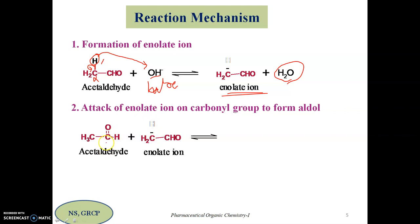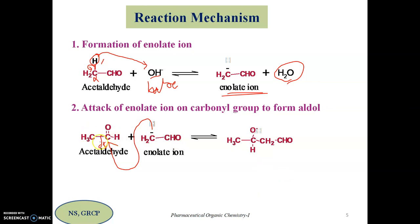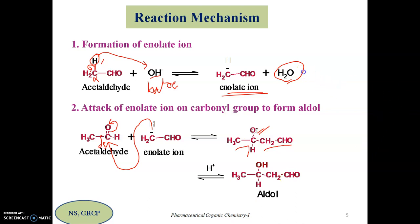In step two, the enolate ion CH2CHO acts as a nucleophile and attacks the carbonyl carbon of the second acetaldehyde molecule, because the carbonyl carbon is electropositive. When it attaches to the carbonyl carbon, the carbon becomes pentavalent, so the pi bond migrates onto oxygen as O minus. We are linking the enolate ion to the carbonyl carbon, giving the corresponding anion.